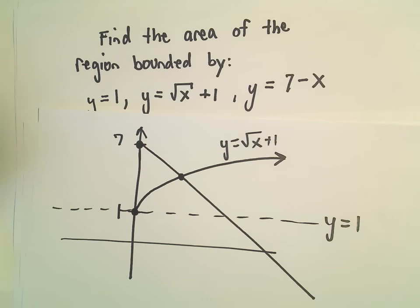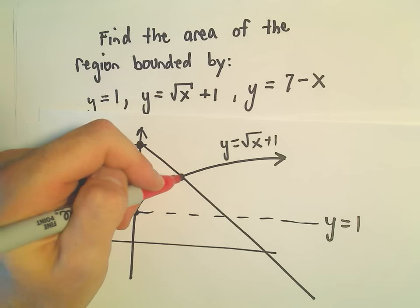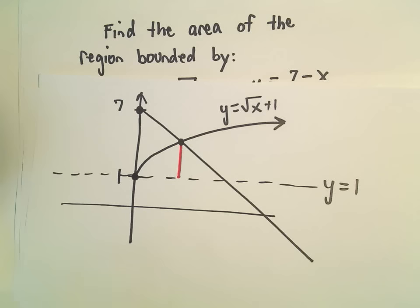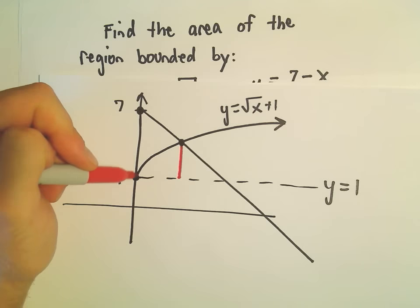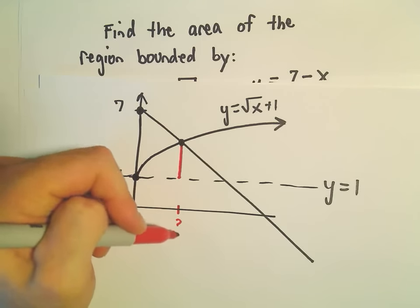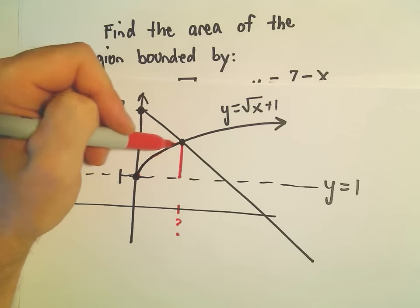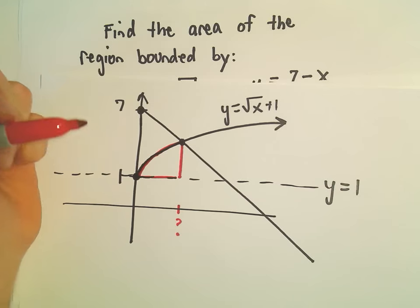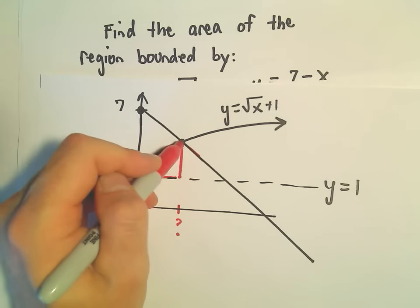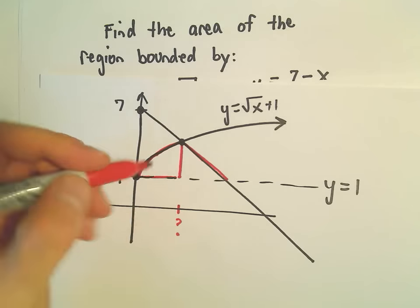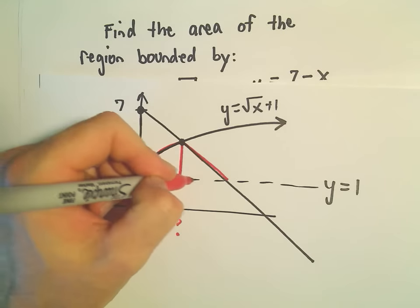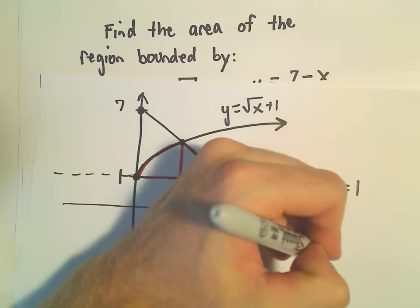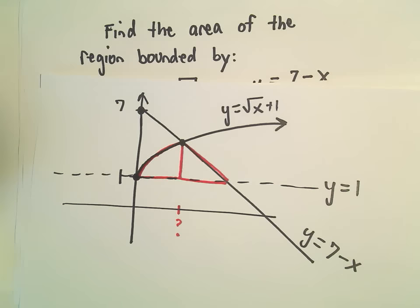So to do this one, we have to be a little careful because we're actually going to have to chop this up into two different regions if we integrate with respect to x, which we will in this case. Notice the top function over this part will be the square root of x plus 1. The bottom one is just the line y equals 1. But then as we move over past this point of intersection, the region is going to be bounded above by this line 7 minus x, and still bounded below by y equals 1. But what that tells me is we're going to have to break this up into basically two integrals.